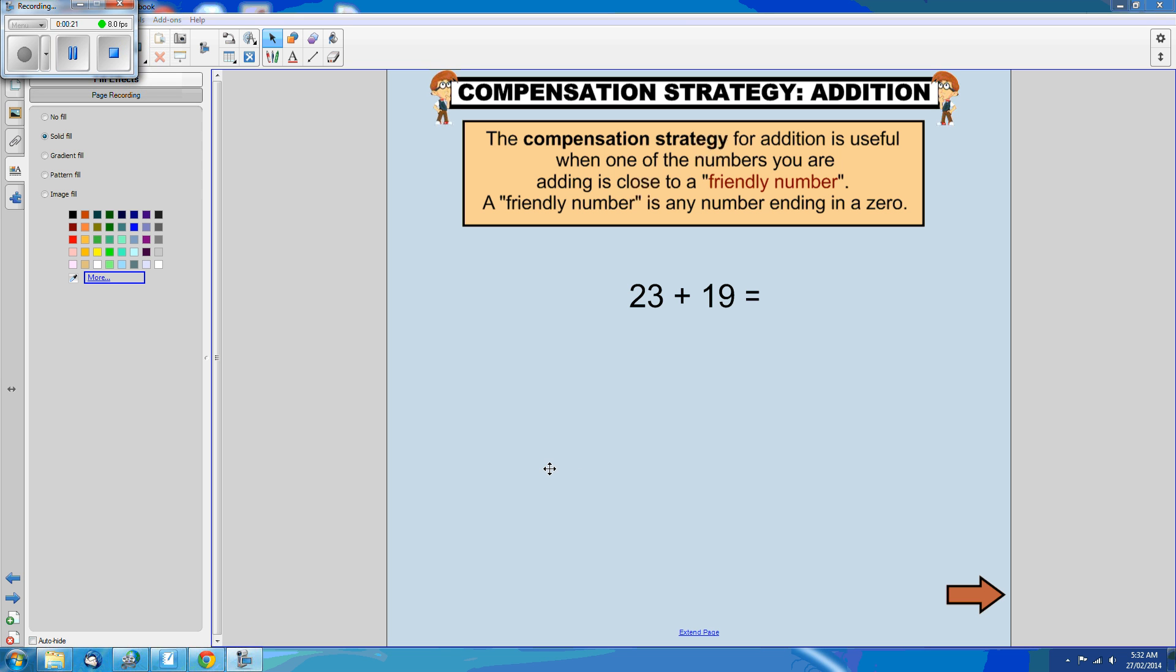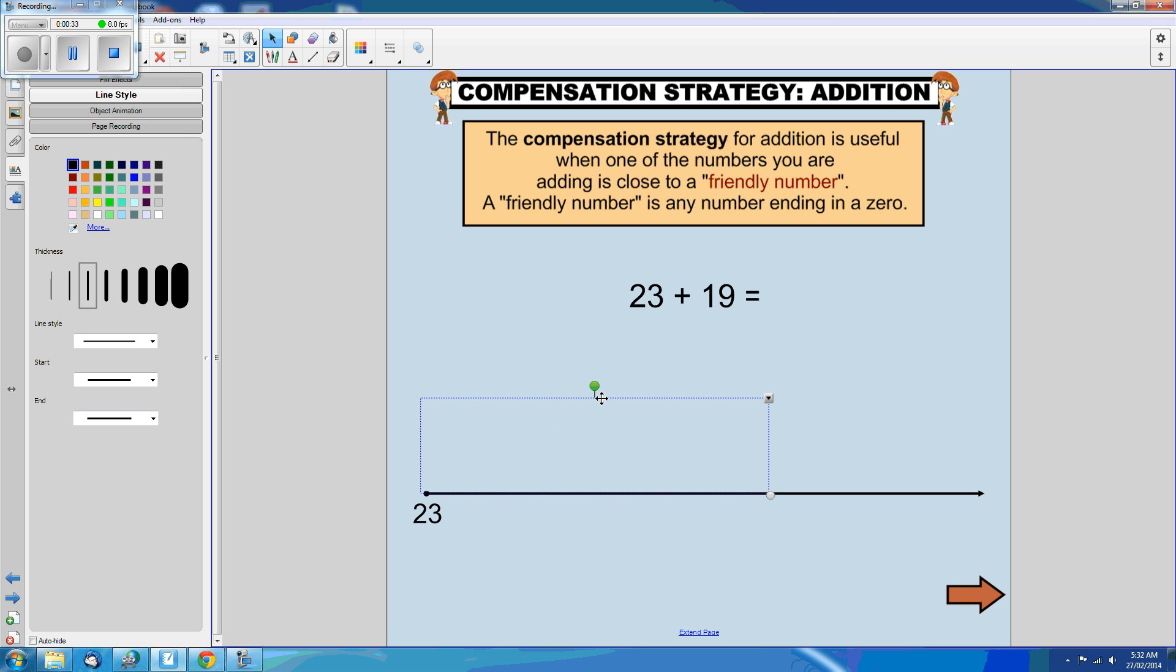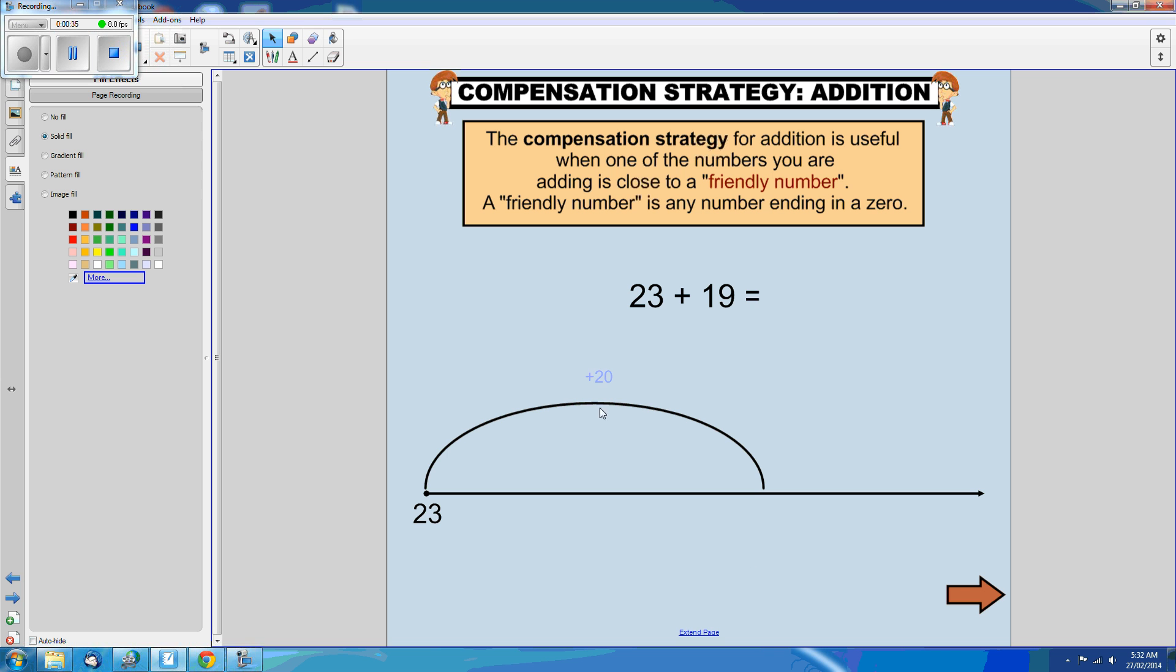I'm going to go ahead and have an open number line here. Start with my 23, and because 19 is close to 20, I'm going to go ahead and add 20. So when I add 20, it's 43.